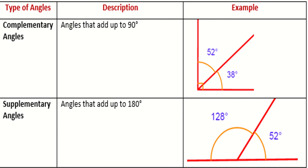Here is a summarized form of complementary and supplementary angles. Complementary angles add up to 90 degrees — for example, 40 degrees and 50 degrees. The angles whose sum is 90 degrees are known as complementary angles. Similarly, supplementary angles add up to 180 degrees — for example, 128 degrees and 52 degrees sum to 180 degrees and are supplementary angles.